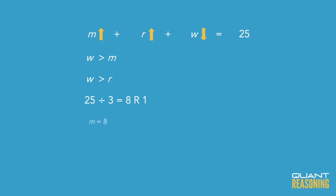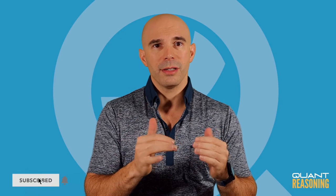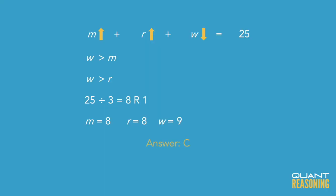I'm glad we got a remainder of one, because we do need W to be above M and R. We'd like W to be as close as possible to M and R since we need to minimize it, but it still needs to be slightly above. That remainder of one is perfect — we give it to W and we're done. That minimizes W while keeping it slightly above M and R. We maximize M and R, minimize W, and get eight for M, eight for R, and nine for W.